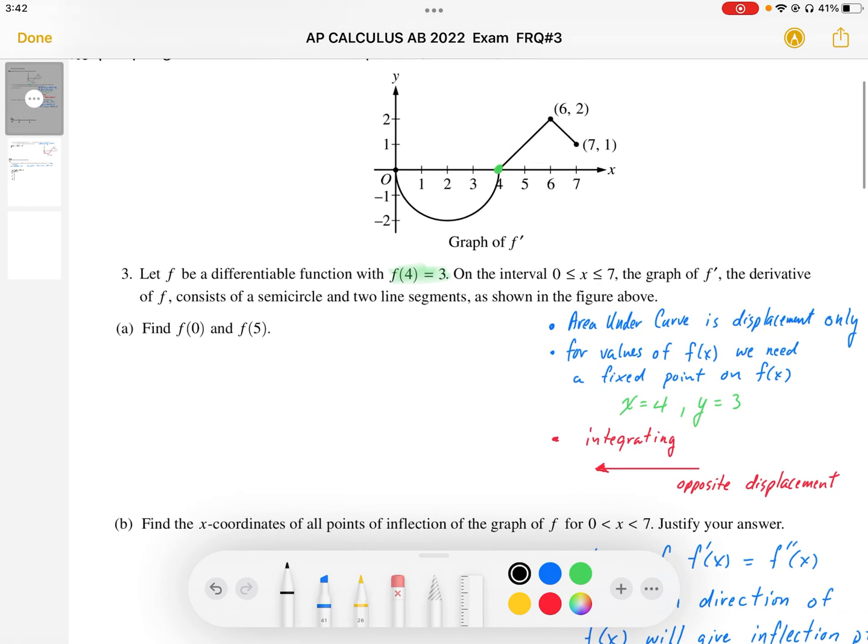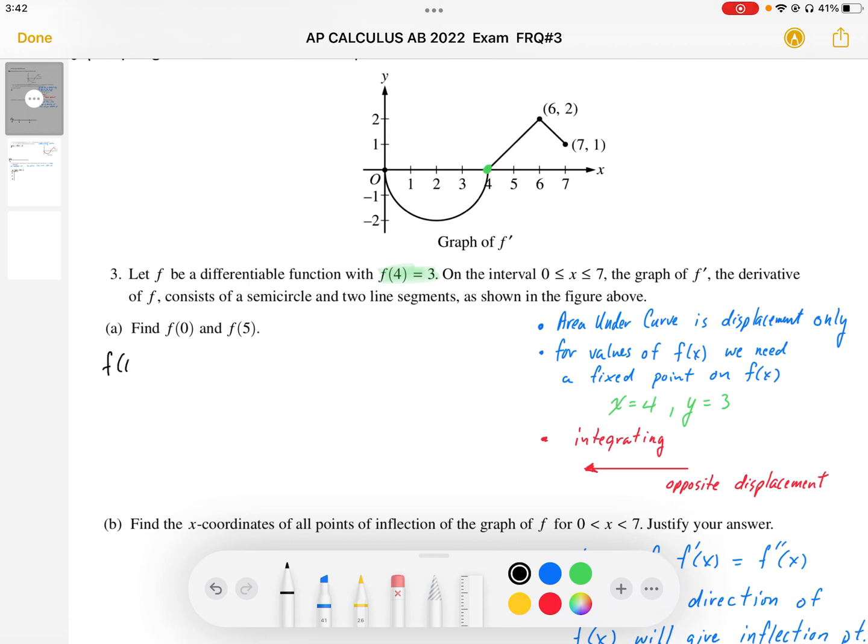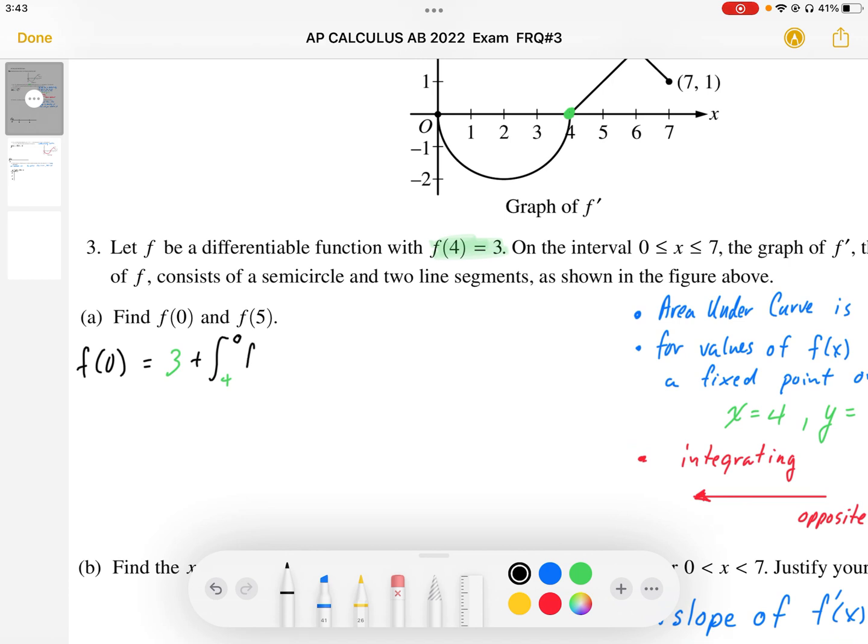If I want to calculate the value of f of 0, f of 0 looks like this. We need to start at a y-coordinate of 3, and we're going to add on the displacement from x equals 4 to x equals 0. I'm just going to highlight this. This area here is going to be the same as the semicircle area from 4 to 0. Now it's important to note that this area is going to be the opposite displacement.